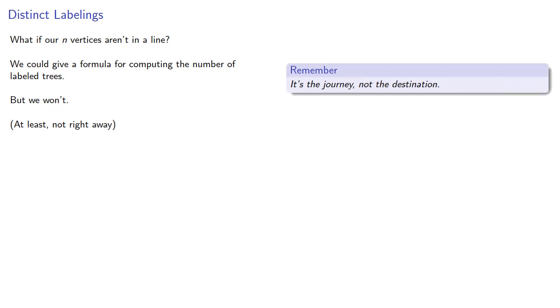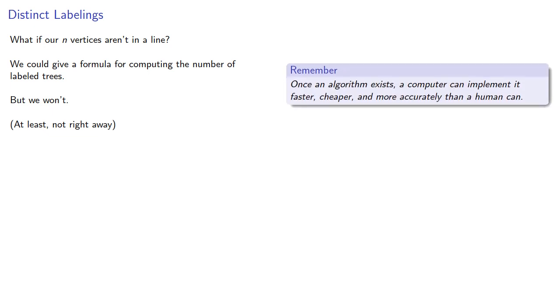And, more importantly, once an algorithm exists, a computer can implement it faster, cheaper, and more accurately than a human can. Which means you don't want to spend your time memorizing formulas and algorithms. You want to spend your time learning how to create these things, so let's analyze the problem.